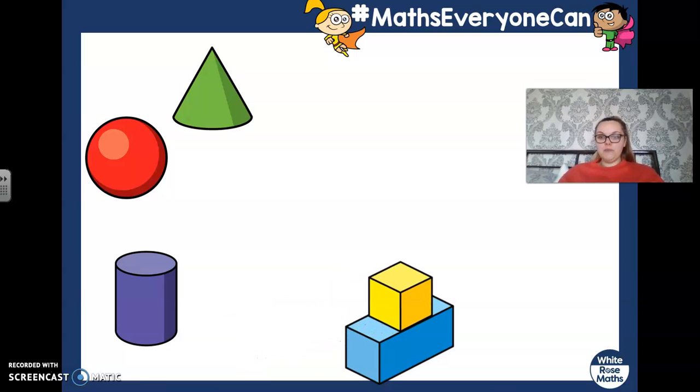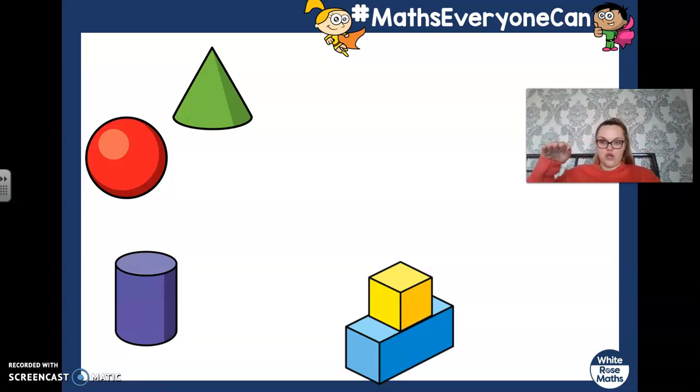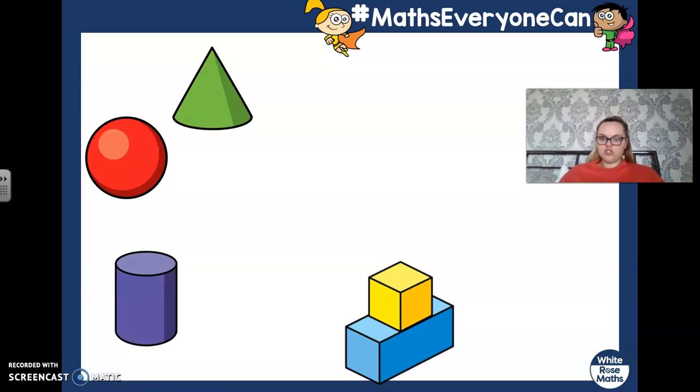So the cuboid has a flat surface and the cube has a flat surface at the bottom too. So when we put the cuboid and then we put the cube on the top, it can stay on the top and it won't fall off.